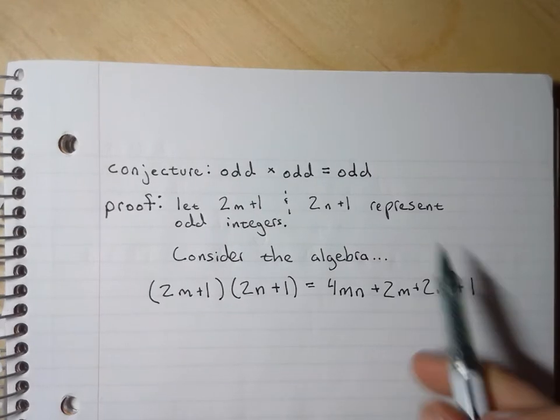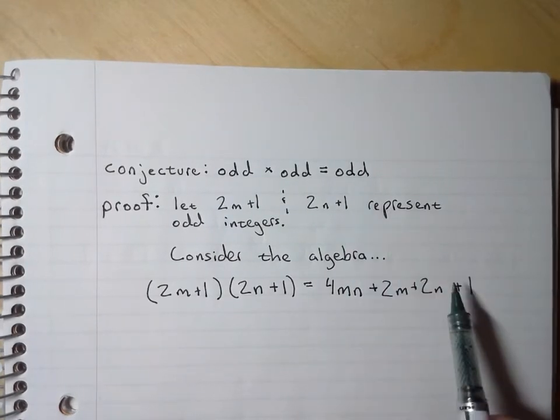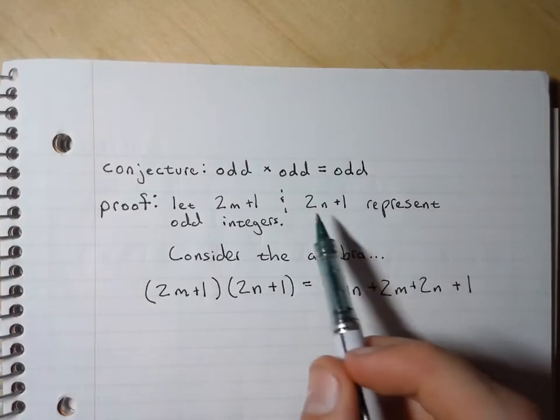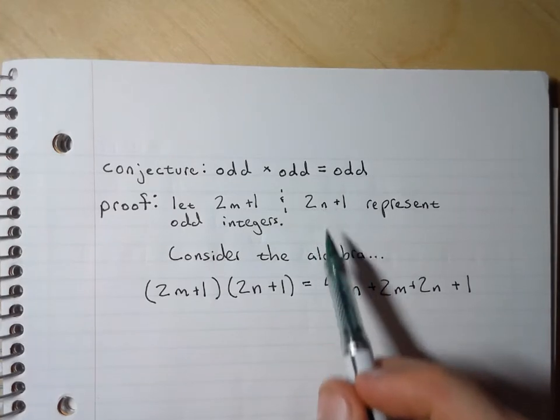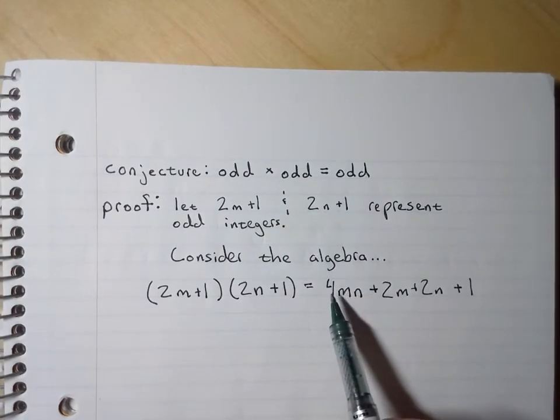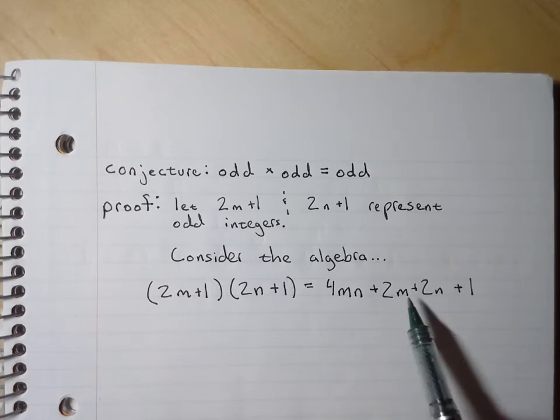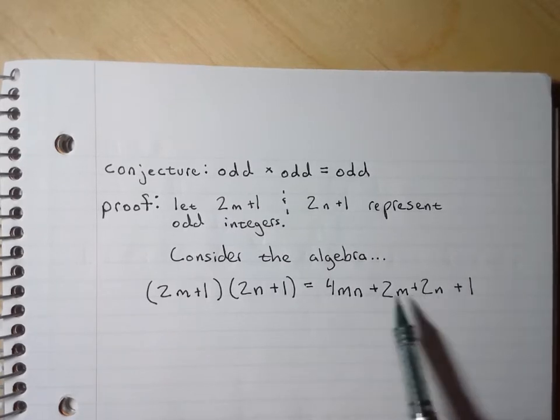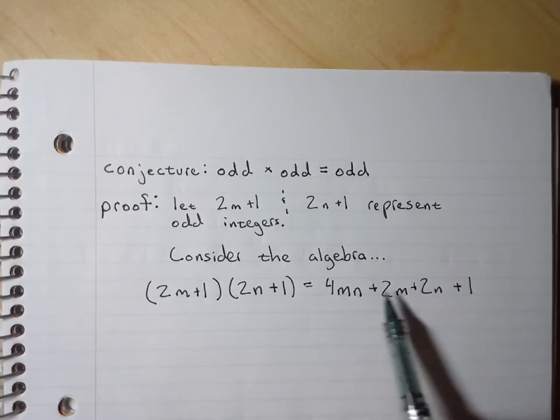Now I know I want the form of an odd number, so the fact that I have this plus 1 out here is a pretty good sign. I know I want 2 times some integer, and so it's good that I've got a 4, a 2, and a 2 here, because that leads me to see that I can factor out a 2 from those 3 terms.